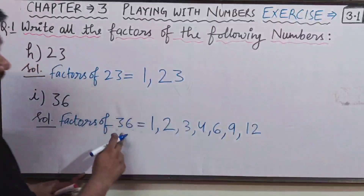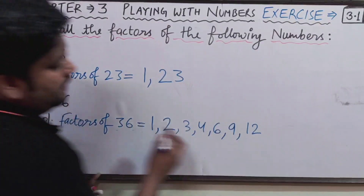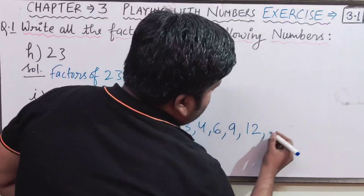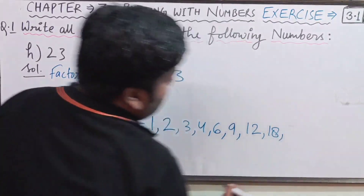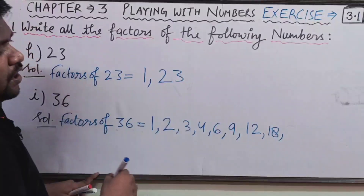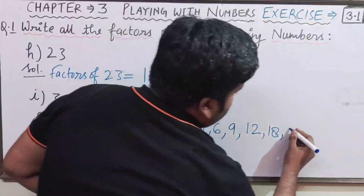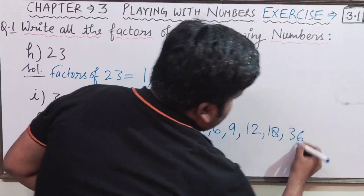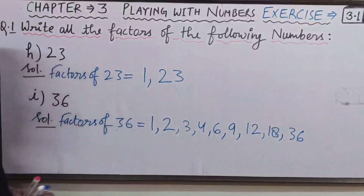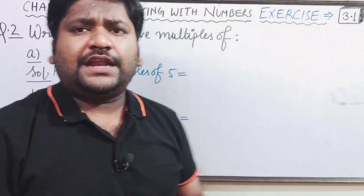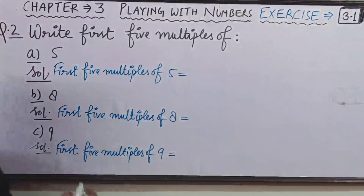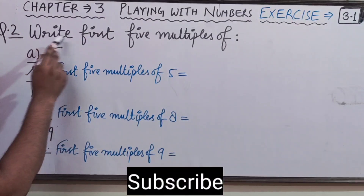The factors of 36 are 1, 2, 3, 4, 6, 9, 12, 18, and 36. These are all the factors of 36. Now let us move to the second question.